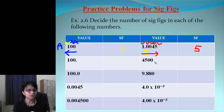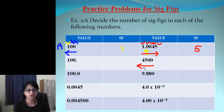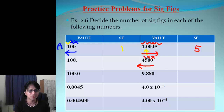Let's do 4500. There is no decimal point — it's absent. So I go from Atlantic to Pacific. I do not count the two trailing zeros, but I count 5 and 4. That makes it 2 sig figs.